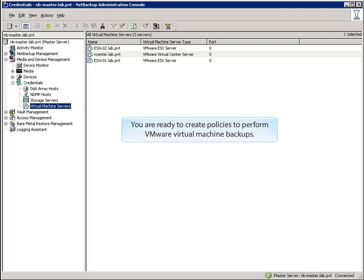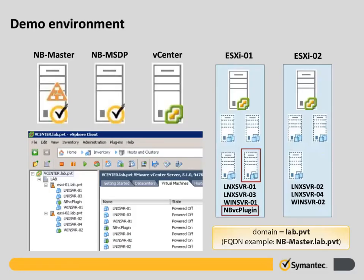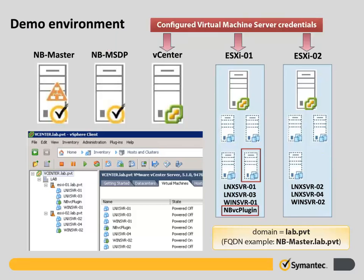Now you are ready to create policies to perform VMware Virtual Machine backups — policy creation is covered in another NetBackup 7.6 demonstration. To summarize what we've accomplished: first, we configured the media server nb-msdp as a VMware Access Host. For media servers this step is unnecessary since all media servers can operate as an Access Host without manual configuration, but we demonstrated the process as it is required for other NetBackup client systems. Next, we configured credentials for NetBackup Access Hosts to access the Virtual Machine servers vcenter.lab.pvt, esxi-01.lab.pvt, and esxi-02.lab.pvt. This enables the configured NetBackup Access Hosts to access VMware Virtual Center servers during Virtual Machine Discovery, Backup, and Restore operations.